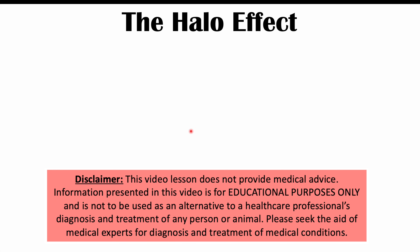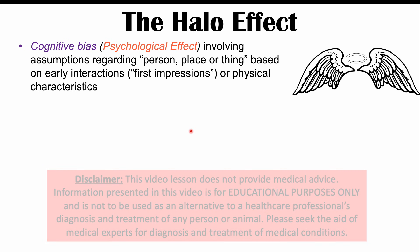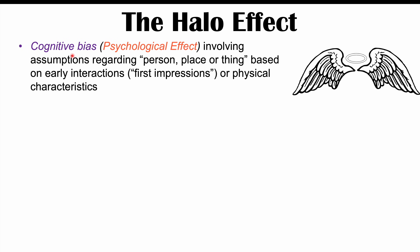Hi everyone, this lesson is on the halo effect. The halo effect is a cognitive bias or psychological effect involving assumptions regarding a person, place, or thing based on early interactions — what we would call first impressions — or obvious, overt physical characteristics.